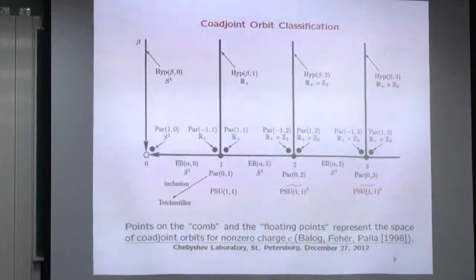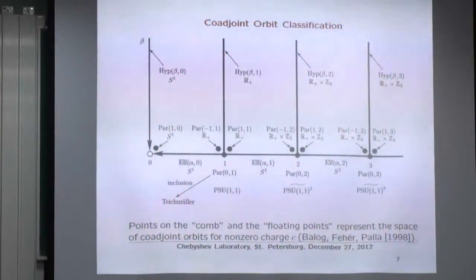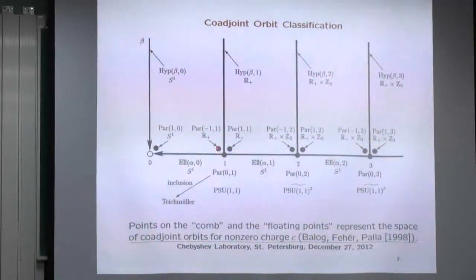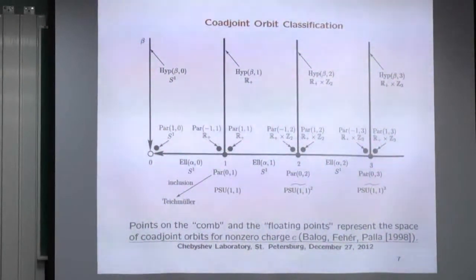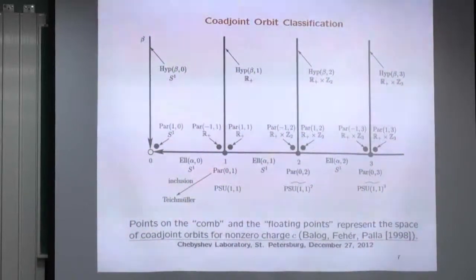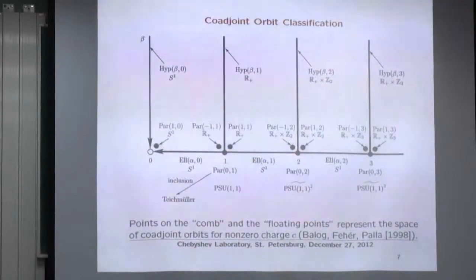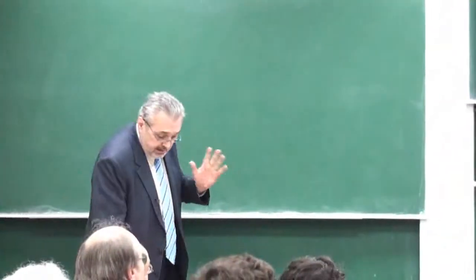The classification was given by Balog, Fehér, and Palla, with a long history starting with Witten and Kirillov. The moduli space has hyperbolic orbits, elliptic orbits in the open interval, and parabolic orbits that come in triples. This is a non-Hausdorff space — you cannot separate certain points from each other. Among all these orbits, the first parabolic orbit is in fact the smooth version of the universal Teichmüller space. What this has to do with KdV is an open question, and some of them are quite difficult.